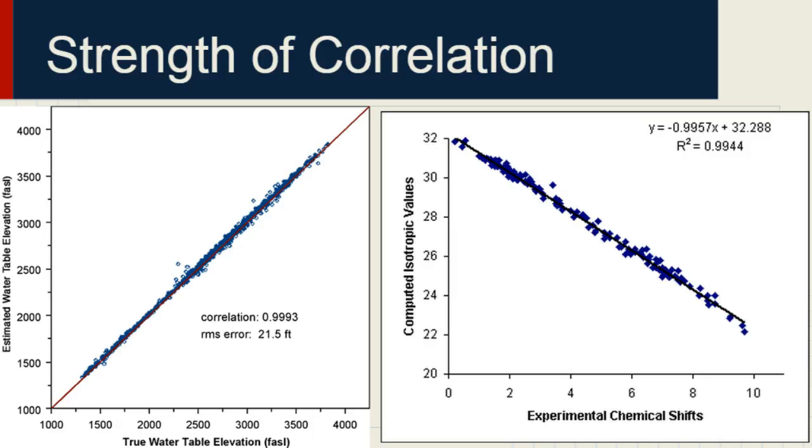Here, we have two examples of strong correlation. You can see that all of our data points are clustered very closely to a line. On the left, we've got true water table elevation. And on the y-axis, we've got estimated water table elevation. The difference between estimate and true, very little.